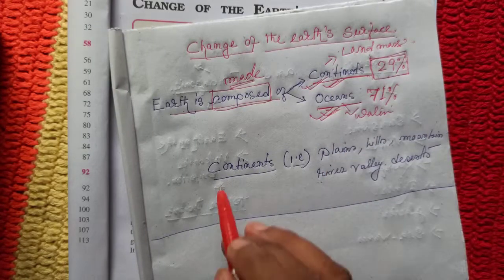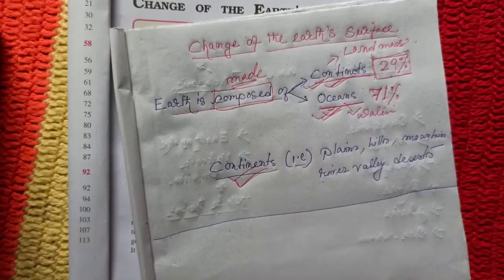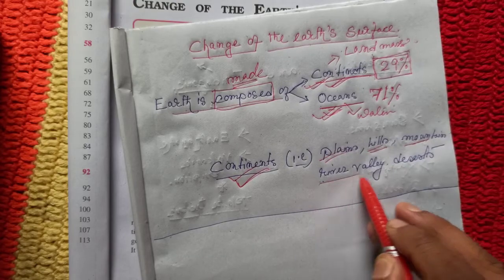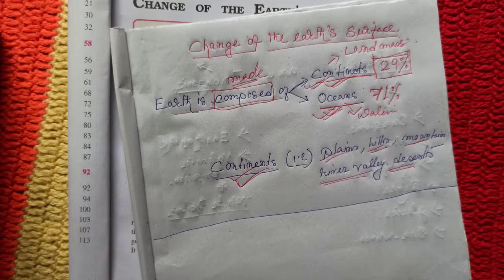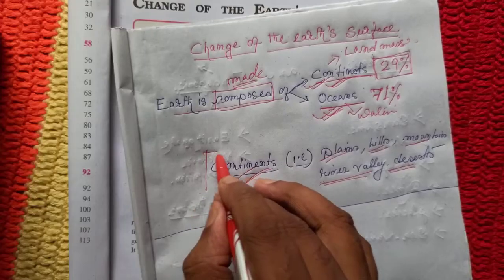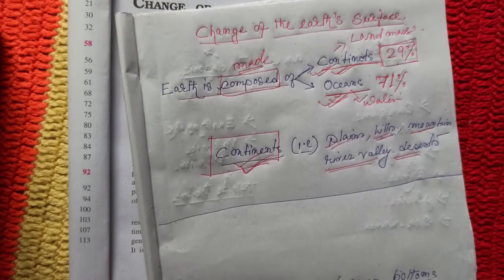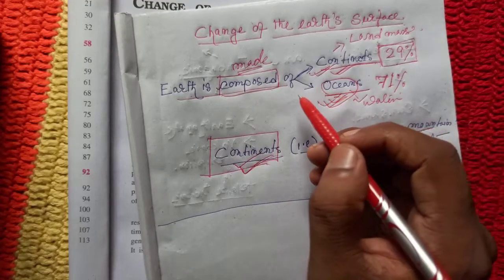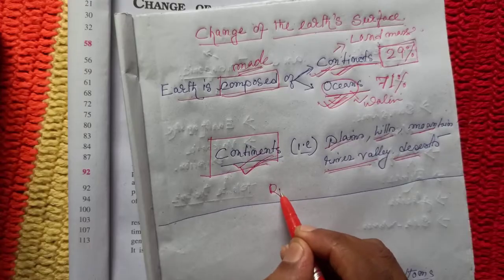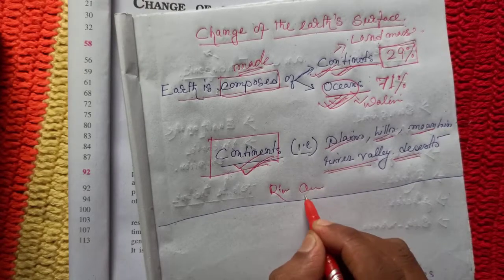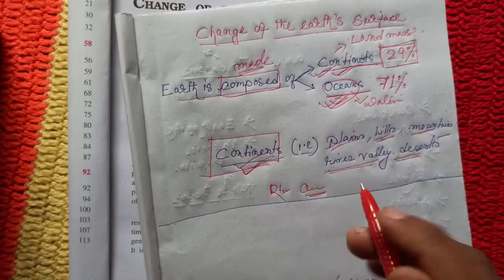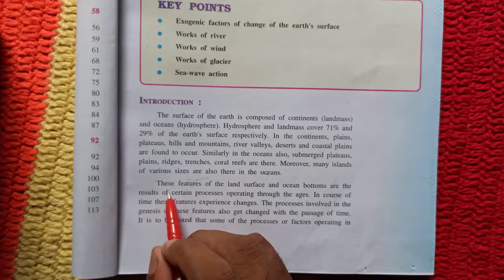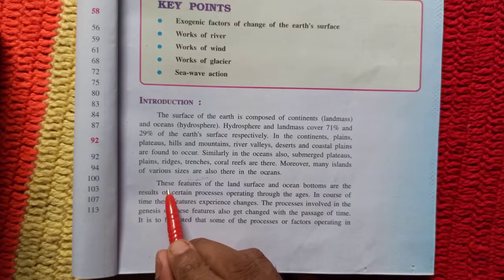Continents are land masses — that includes plains, hills, mountains, river valleys, and deserts. All these land masses are called continents. Oceans mean water bodies: rivers, oceans, and seas — all of these are considered water bodies.